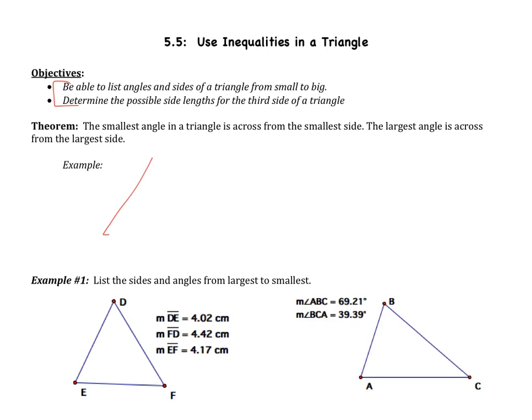Drawing yourself an example — let's come up with three angle measures. Let's say one angle is 40, one angle is 60, that would make the last angle 80, because they all sum to 180. We'll mark the vertices A, B, and C.